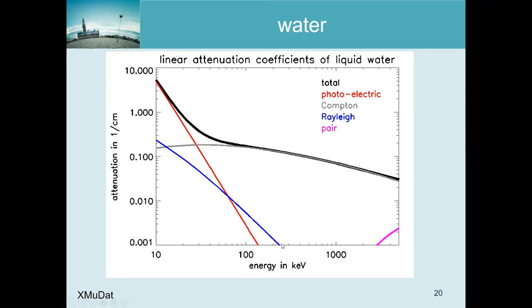The red and gray curves together almost completely explain the total attenuation, but there is also Rayleigh scatter - a photon interacting with the atom as a whole. Like a billiard ball hitting a massive object that cannot deform, the ball bounces away losing no energy. Similarly, the photon is deflected but continues with the same energy, making these interactions very difficult to detect. In nuclear medicine we can ignore them, but not in micro-CT where low energies are more important.